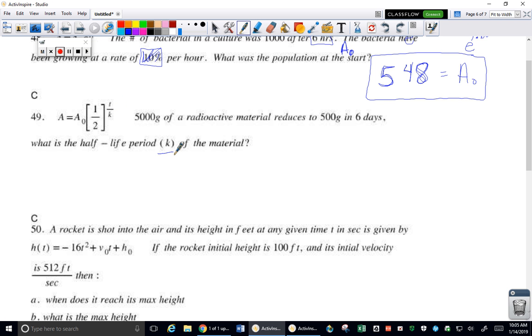A₀ times one half to the T over K. So we want to figure out how long is the half-life. We started with 5,000 grams, so that's A sub zero. We currently have 500 grams, that's your A, and your time is six days.